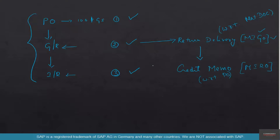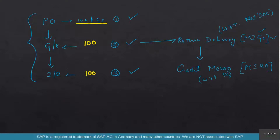Like we were discussing in the previous chapter, we ordered 100 kilos of flour and we got 100 kilos. The vendor did send 100 kilos and sent an invoice for 100. But we found out that 50 was defective, so we returned 50. That means we only got a net of 50 and the vendor issued a credit memo for 50. So that's settled.